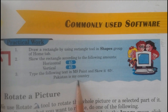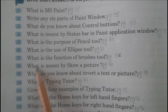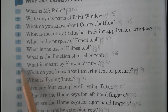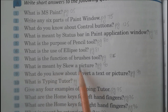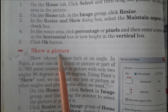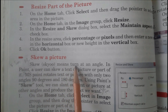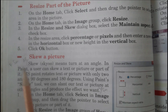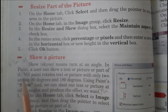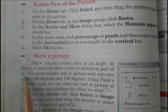Students, do it by yourself. Now let's cover the exercise. Exercise A, Question 8: What is meant by skew a picture? Heading: Skew a picture, page number 90. Skew means to turn at an angle. In Paint, a user can skew a text or picture or part of it. This is the answer to Question 8.